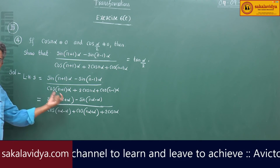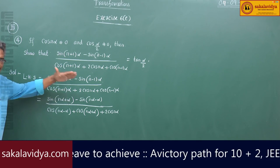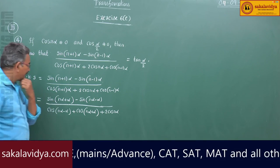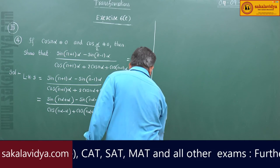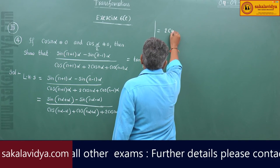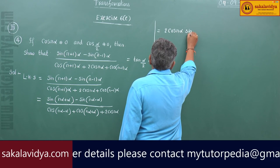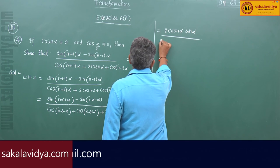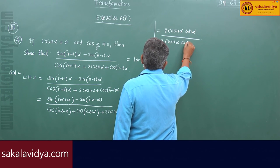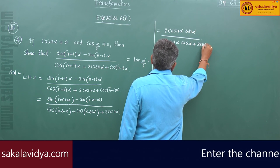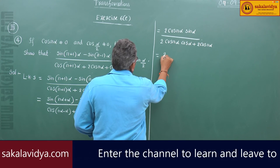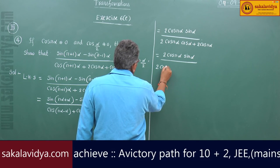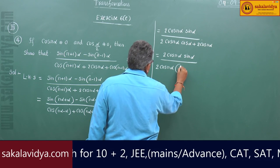Notice the numerator is in the form sin(a+b) minus sin(a-b), which equals 2cos(a)sin(b). So the numerator becomes 2cos(nα)sin(α). The denominator is in the form cos(a-b) plus cos(a+b), which equals 2cos(a)cos(b), giving 2cos(nα)cos(α) plus 2cos(nα). Taking 2cos(nα) common from denominator gives 1 plus cos(α).